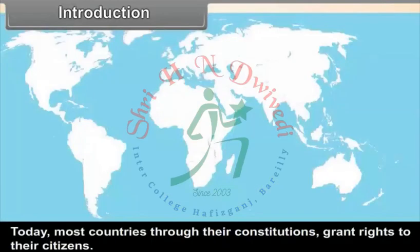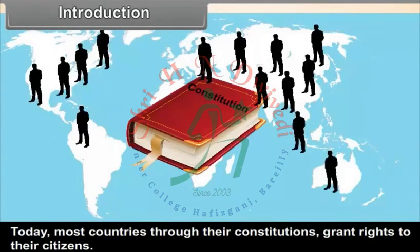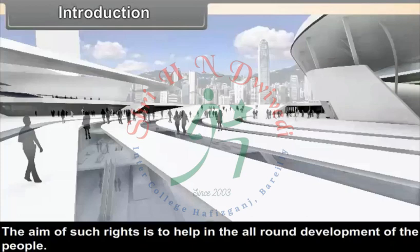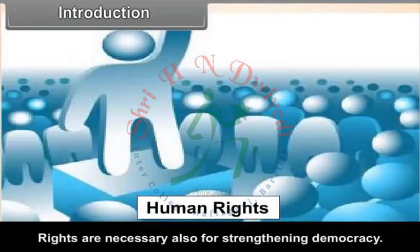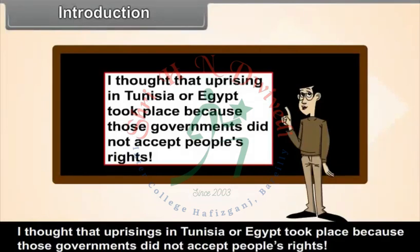Introduction. Most countries, through their constitutions, grant rights to the citizens. The aim of such rights is to help in the all-round development of the people. Rights are necessary also for strengthening democracy. The fundamental rights, therefore, constitute a very important part of a constitution. Uprisings in Tunisia or Egypt took place because those governments did not accept people's rights.